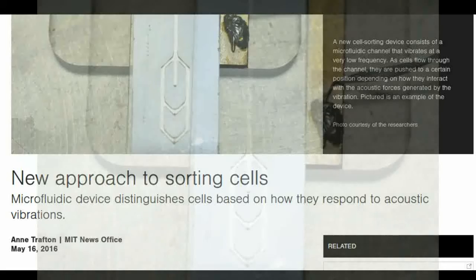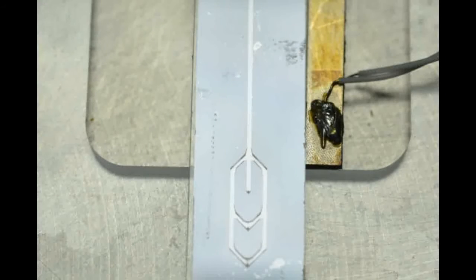Another advantage to this approach is that it does not require altering the cells in any way with chemical labels. This technique could potentially be used to develop a handheld device that would make it easier and faster to do a test known as a complete blood count.